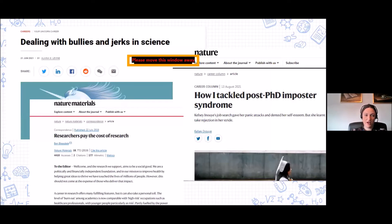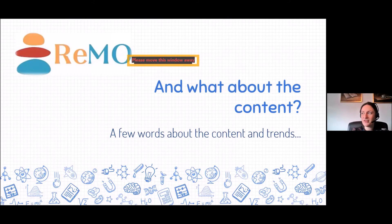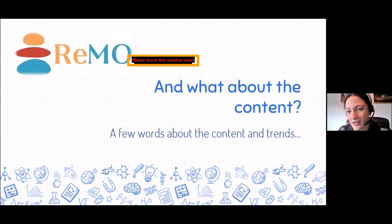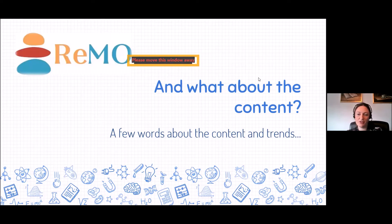Some titles I found very interesting include: 'Dealing with Bullies and Jerks in Science,' 'How Researchers Pay the Cost of Research,' and 'How I Tackle Post-PhD Imposter Syndrome.' My PhD thesis was about workplace bullying, so naturally I was attracted to that topic. The first part of the presentation was a bit technical, and the second part is about giving you some of my insights on the content — some words about the material I reviewed and the trends I noticed.